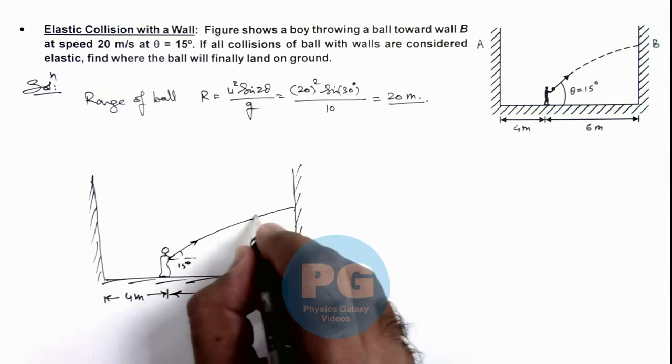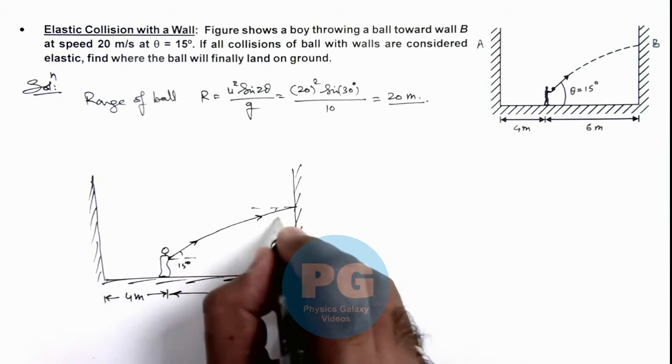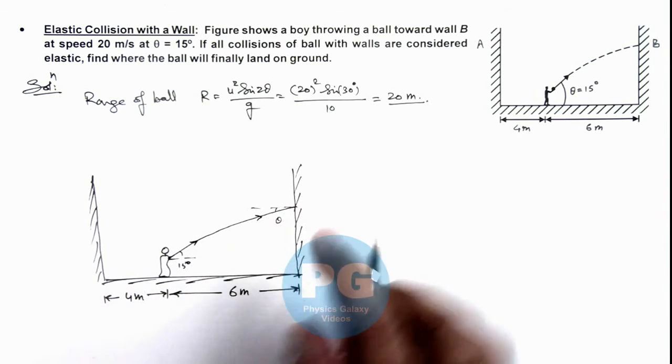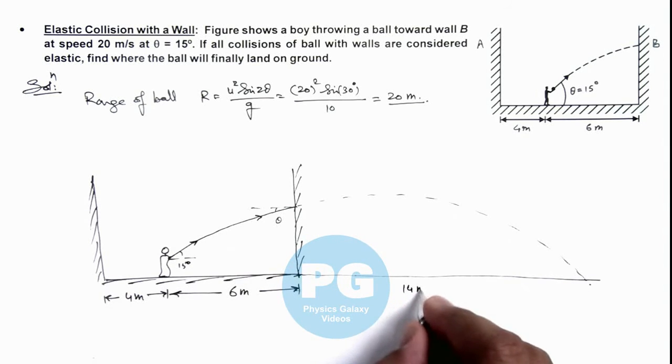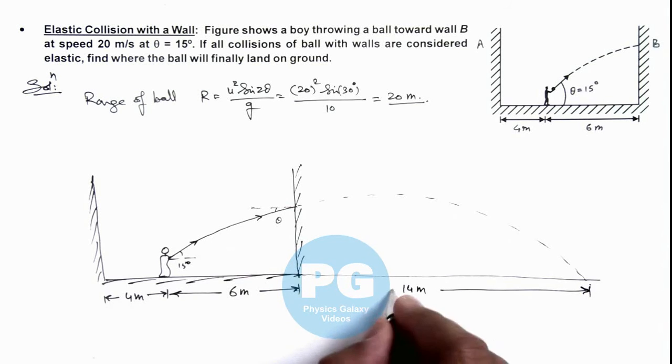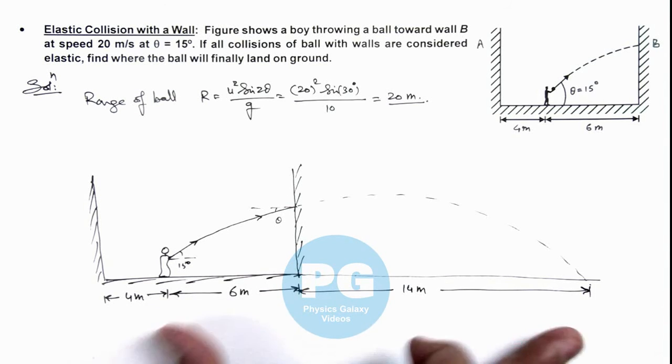...the ball strikes, say it strikes at an angle theta. If the wall is not there, it would have continued its projectile and fall on the ground at a distance of 14 meters away from this wall, because the total range of projectile is 20 meters.